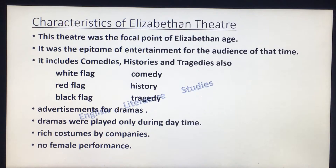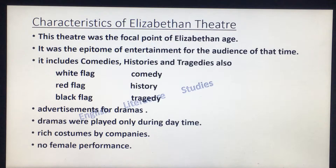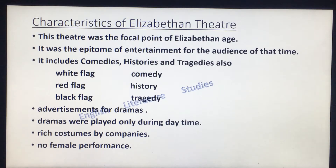Coming to the characteristics of Elizabethan theatre: this theatre was the focal point of the Elizabethan age and the epitome of entertainment for audiences of that time. It included comedies, histories, and tragedies, and these genres were advertised through flags. When a comedy, history, or tragedy was going to be staged, they advertised using flags so people could see in advance and decide whether to attend. A white flag indicated comedy, a red flag indicated history, and a black flag indicated tragedy.